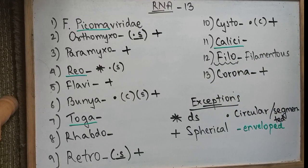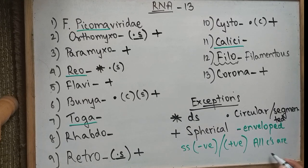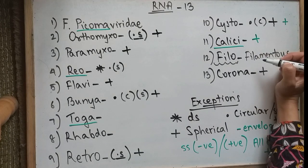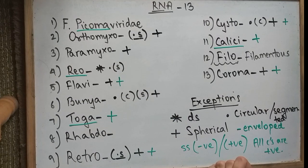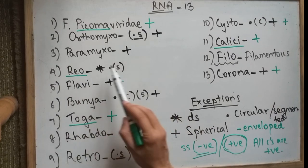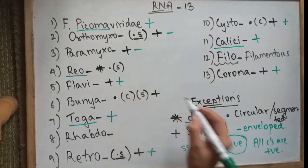Now we'll move on to single-stranded negative or positive, starting with the positive ones. Remember that all the C's are positive: Cysto, Calici, and Corona are all single-stranded positive, along with Retro, Toga, and Flavi, and Picorna. Other than these, the rest are all negative — except Reoviridae, because it doesn't have a single strand but is only double-stranded.